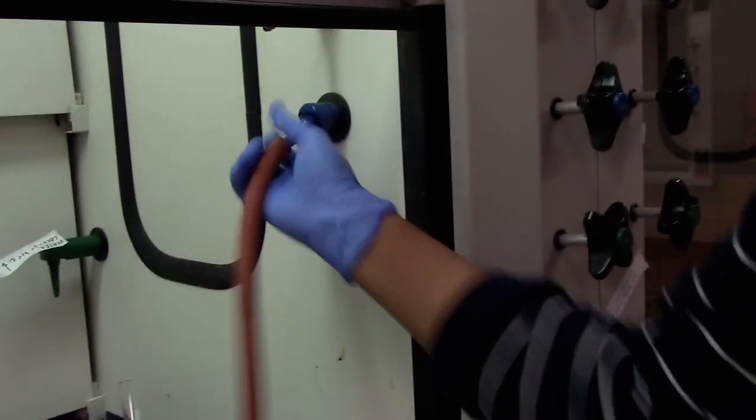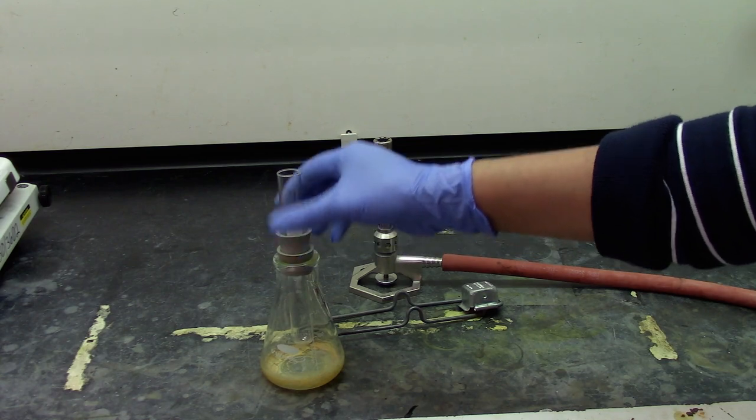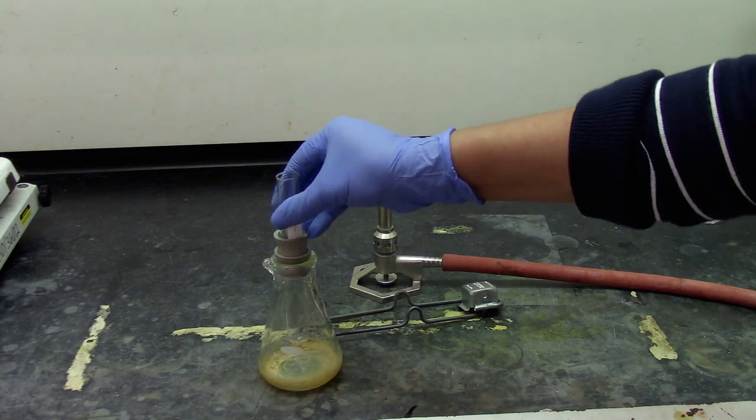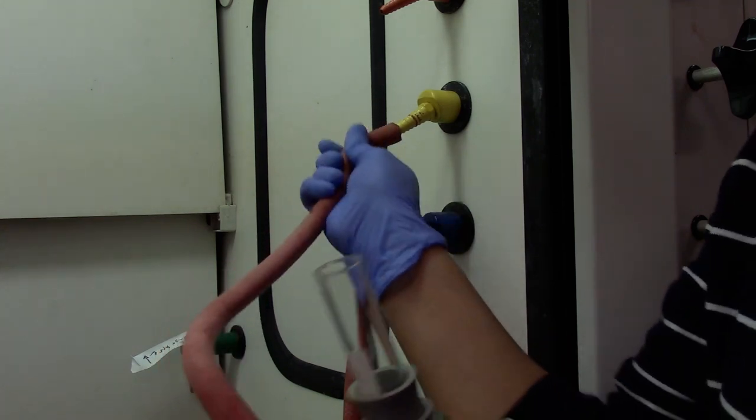For sublimation we need two vacuum tubes. One goes to the gas and connects to the Bunsen burner, the other one goes to the vacuum and connects to the side arm of the Erlenmeyer flask.